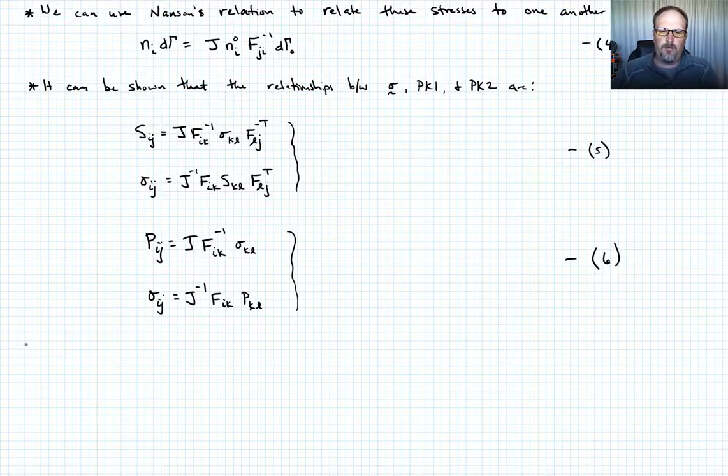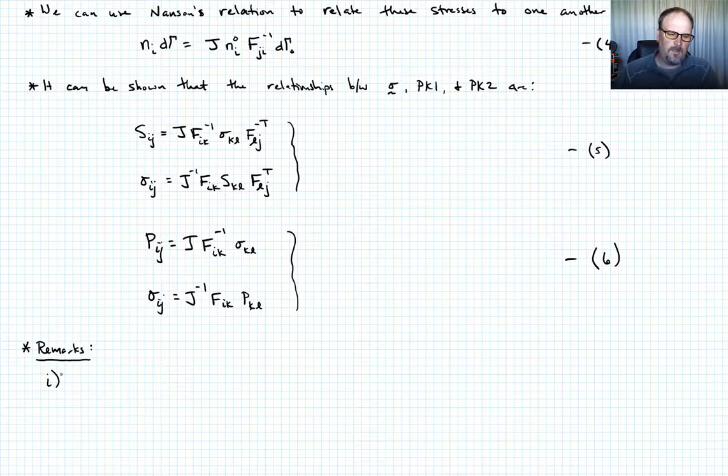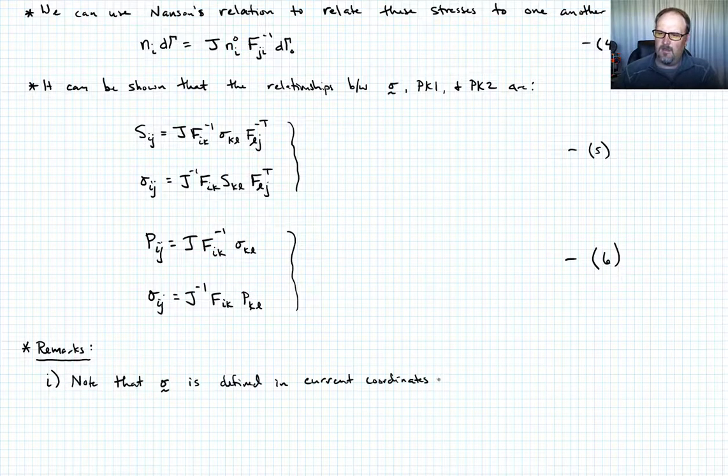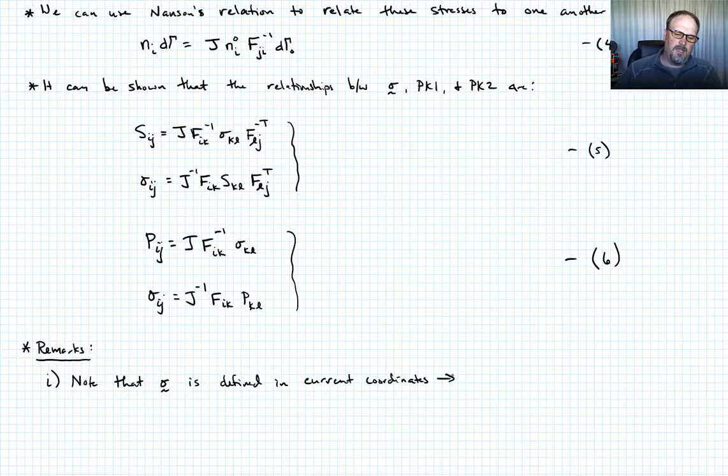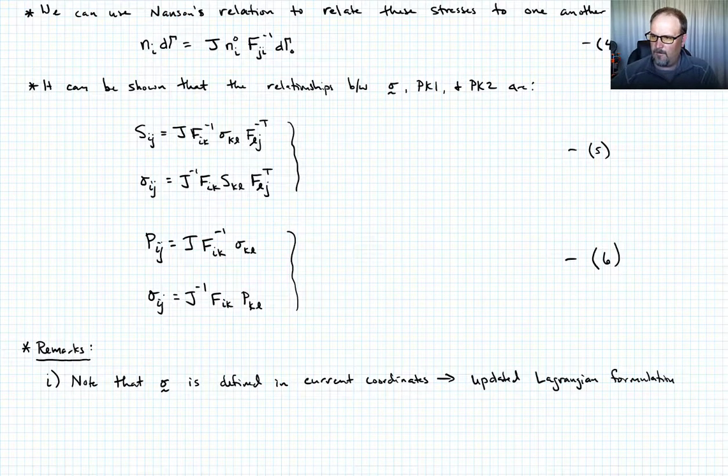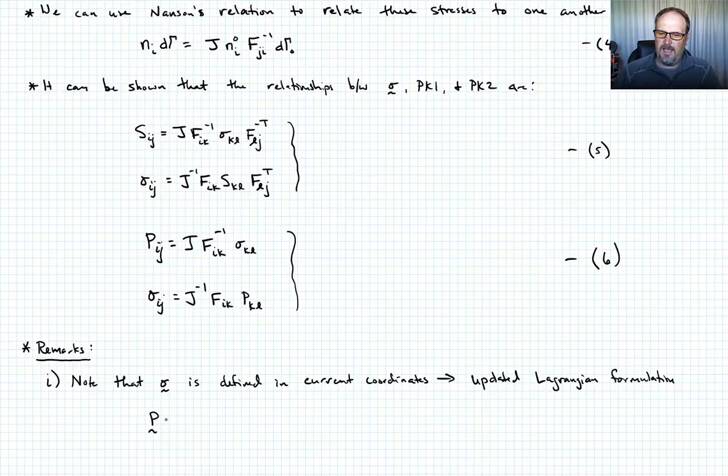Let me give you some concluding remarks now. Number one, note that sigma is defined in current coordinates, and that should tell you something. It tells you that this is what we're going to use for the updated Lagrangian. And that P and S are going to be defined in reference coordinates. So we're going to use those in the total Lagrangian formulation.